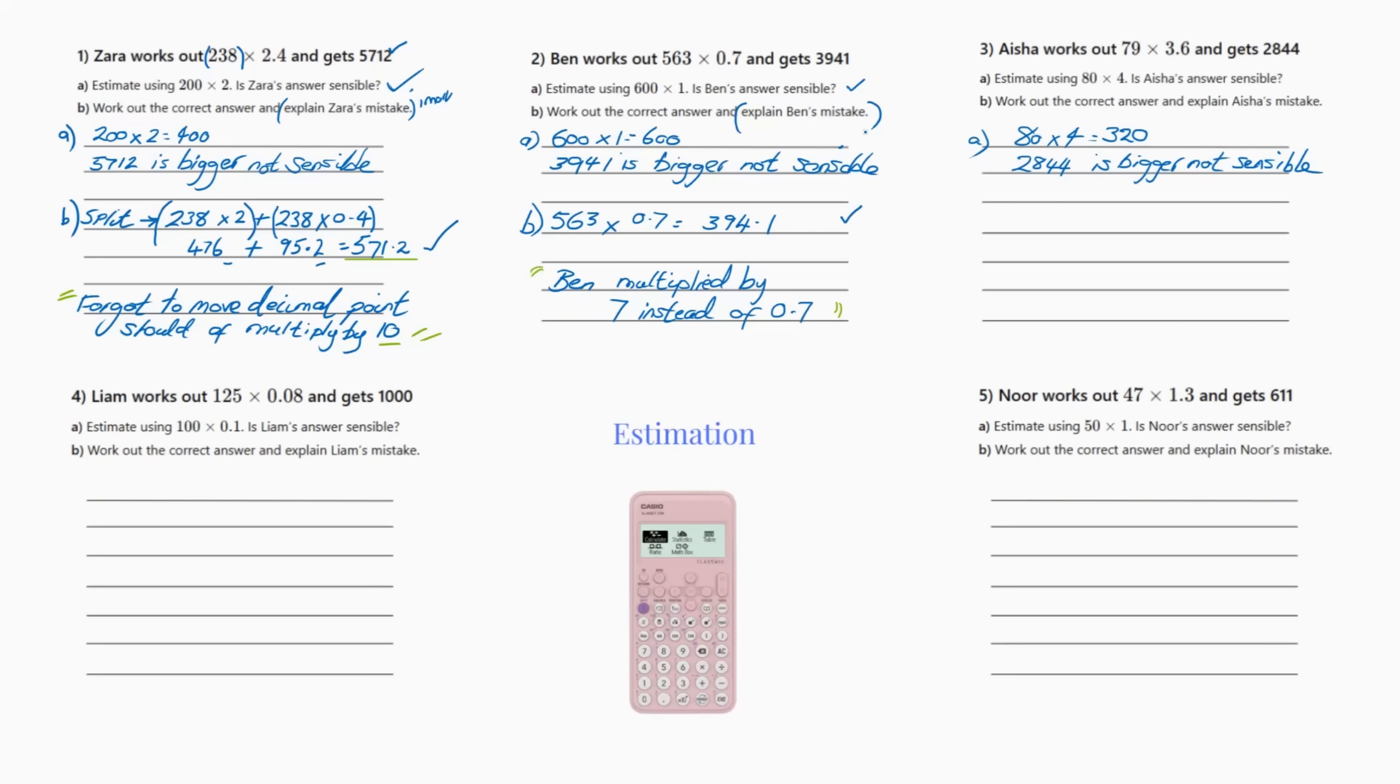However, if the question is on non-calculator you should know how to do long multiplication with decimals. Number three, work out 79 by 3.6 and get 2844, that's Asia. Well estimating using 80 by 4 is 320, so it's not a sensible answer because she got 2844. So let's do this one together.